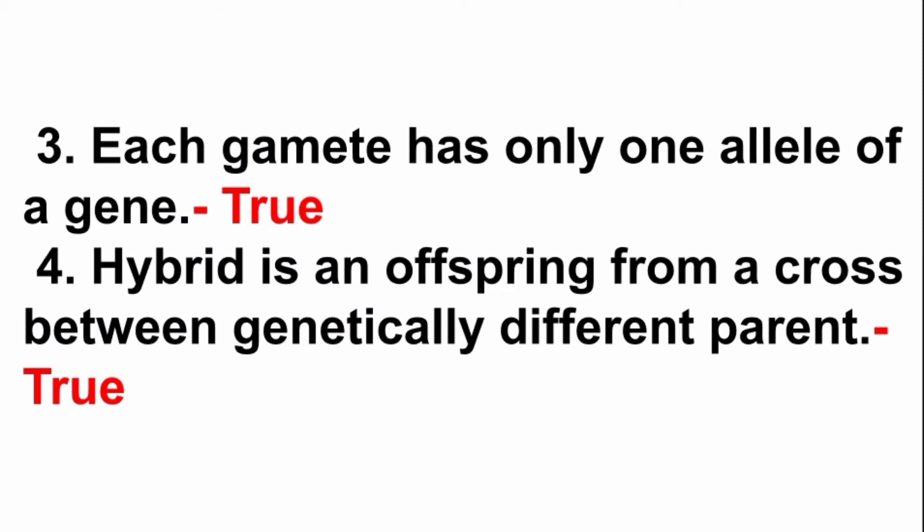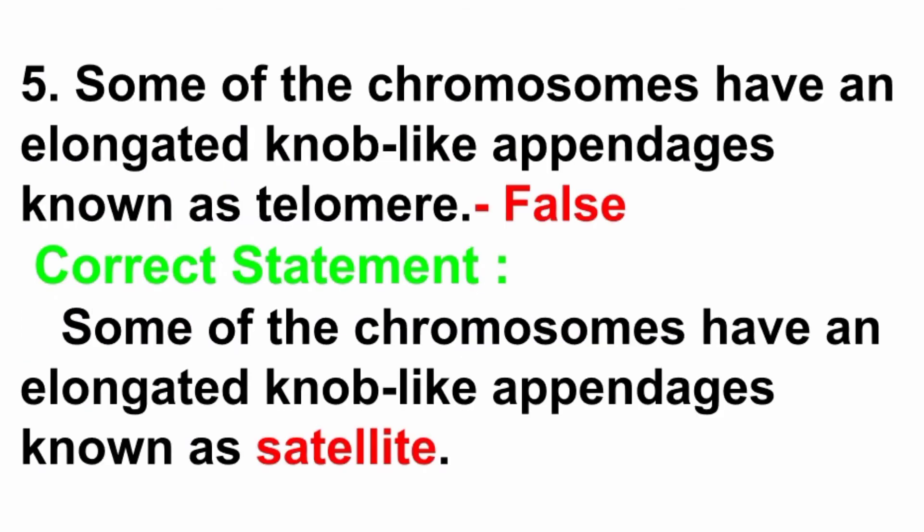Fourth question: a hybrid is an offspring from a cross between genetically different parents. Answer is true. Offspring produced by crossing two genetically different parents is called a hybrid.